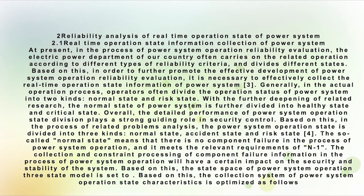The so-called normal state means that there is no component failure in the process of power system operation and it meets the relevant requirements of N-1. The collection and constraint processing of component failure information in the process of power system operation will have a certain impact on the security and stability of the system. Based on this, the status base of power system operation three-state model is set, and the collection system of power system operation state characteristics is optimized accordingly.